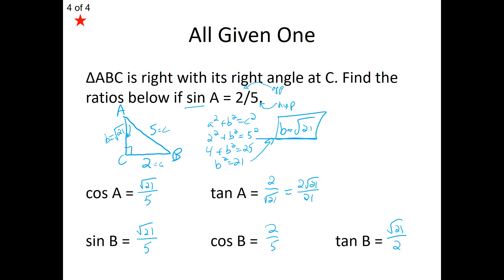Given one ratio of a right triangle, we can find the other five. On the worksheet, I'll give you another example where you walk through a given ratio and find all of them. I'll give you one of the trig ratios of the right triangle, and using the Pythagorean theorem you can find the missing third side and fill in all the other trig ratios. That's the end of our 8.7 Trig Applications lesson. Be sure to hop over and take a look at the 8.7 worksheet. If you have any questions, please don't hesitate to email me. Be good and do good.